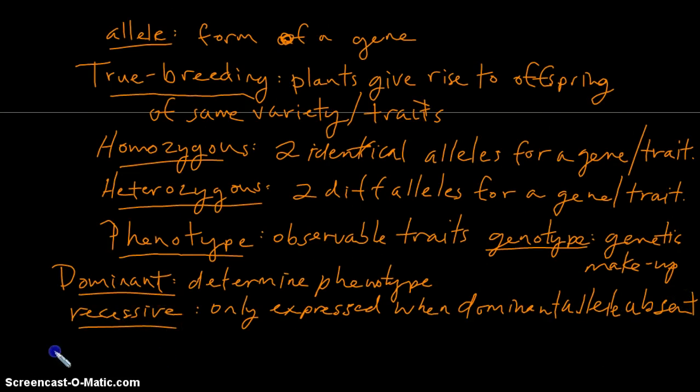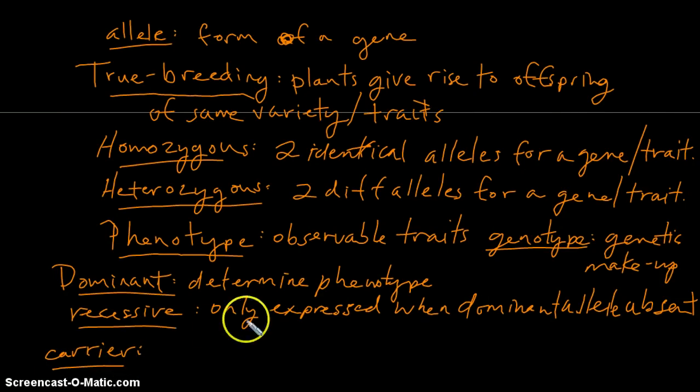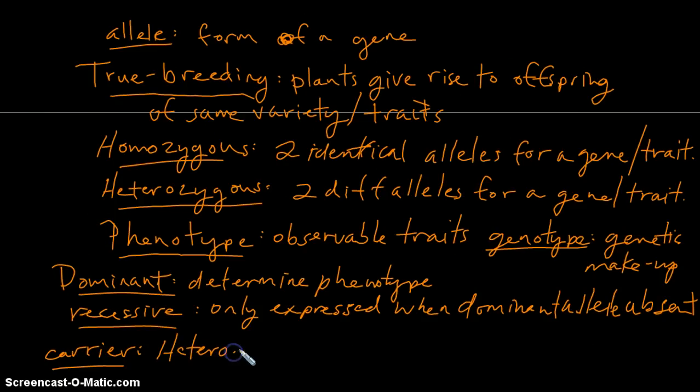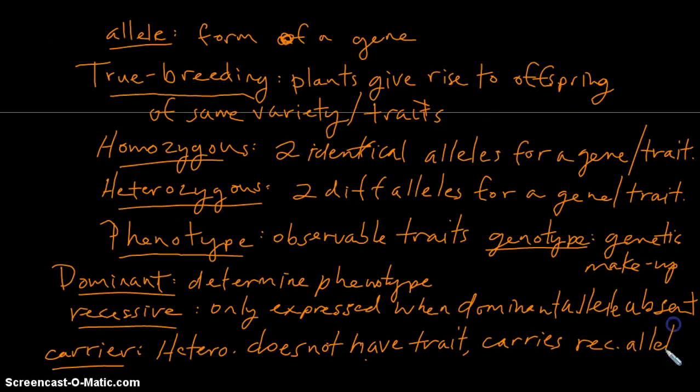Finally, the last one we'll look at is a carrier. A carrier carries a recessive allele, so the person is technically heterozygous. The individual does not have the recessive condition, but by virtue of being heterozygous, the individual carries the recessive allele which can then be passed on to offspring.